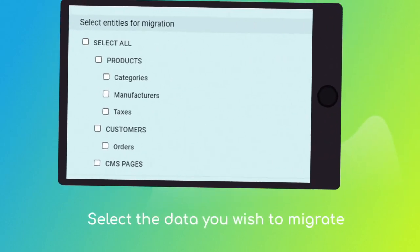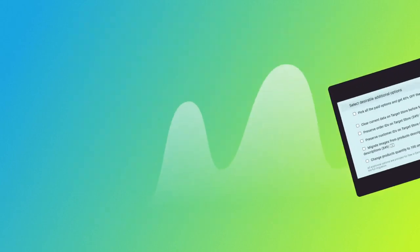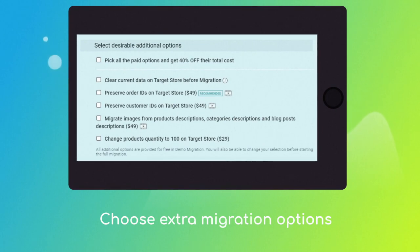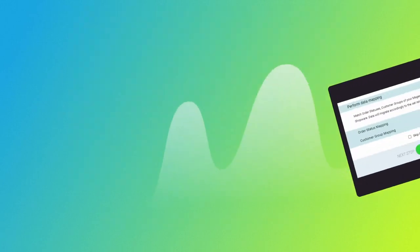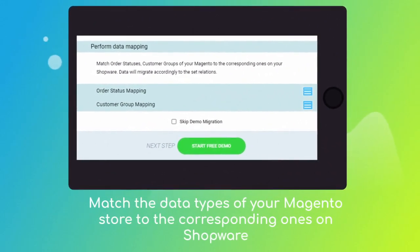Next, click the Choose Entities button to select the data types you'd like to migrate to Shopware. Choose additional options like Automated 301 redirects to preserve SEO juice, or migration of images from product, categories, and blog post descriptions. Then click the hamburger button to match your Magento order statuses and customer groups to the corresponding ones on Shopware.